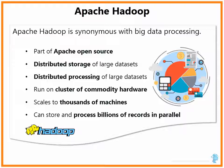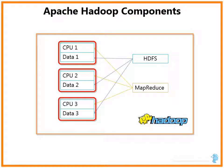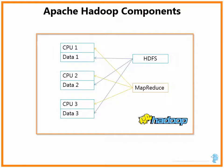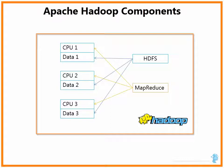Let us look at the components of Hadoop. Hadoop operates on clusters of machines, each with some processing power, CPU and data storage. Hadoop has two core components: HDFS and MapReduce. HDFS, or Hadoop Distributed File System, is a framework that stores data on multiple machines. MapReduce processes the data on multiple machines in the cluster. Hadoop distributes the processing to where the data is — it uses the principle of moving processing to data instead of moving data to processing. The diagram on screen shows how HDFS distributes data to multiple machines and how MapReduce distributes processing to multiple CPUs.